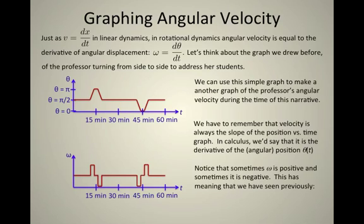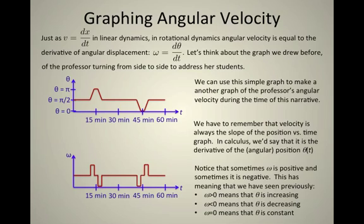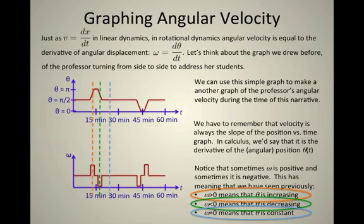Notice that sometimes ω is a positive number and sometimes it's a negative number on this graph. This has the same meaning that we've seen previously. ω > 0 means that θ is increasing. ω < 0 means that θ is decreasing. ω = 0 means that θ is constant. So there are some examples of each of those cases on these graphs. The dotted orange line is crossing the graphs at exactly a point where ω > 0, in other words, θ is increasing. The dotted green line is crossing both graphs at a point where ω < 0 because θ is decreasing. And the dotted blue line is crossing the graphs at a particular point where ω = 0. There are many more points that we could have crossed over or highlighted, but these three certainly kind of satisfied the three conditions I've shown.